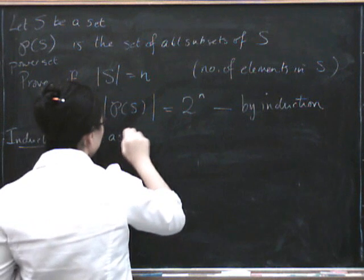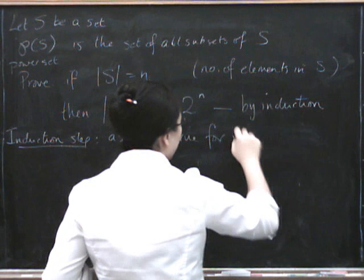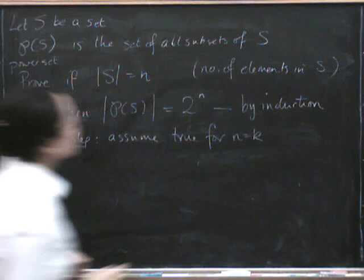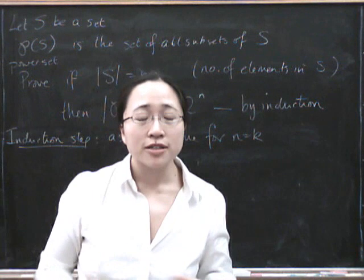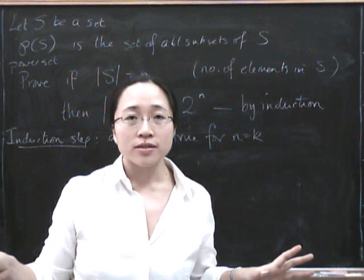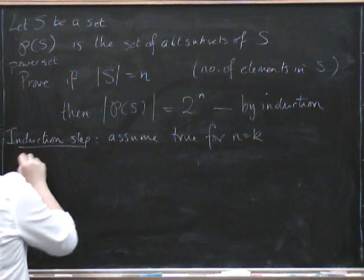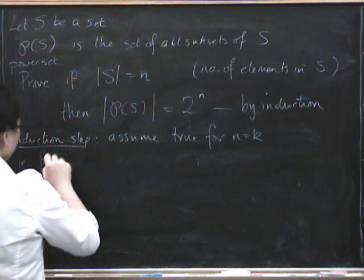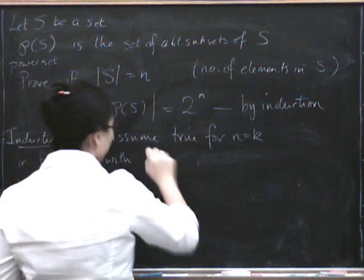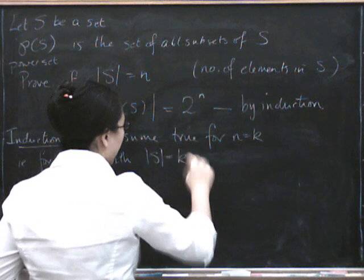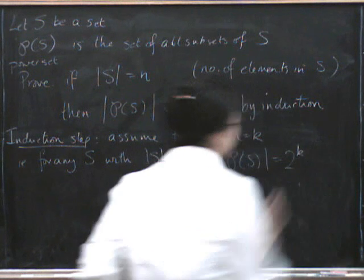We assume that it's true for n equals k, which is to say that if S has k elements, so for any set with k elements, there are two to the power of k subsets of it, i.e. for any S with k elements, the power set has two to the k elements. Right.